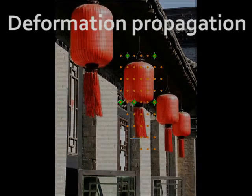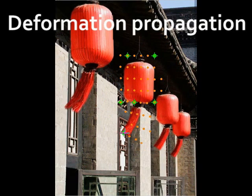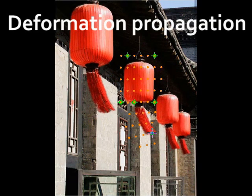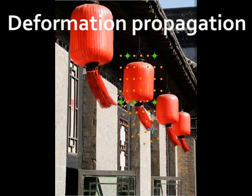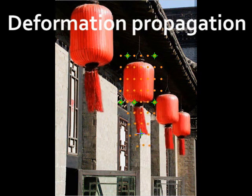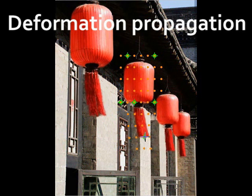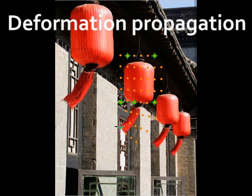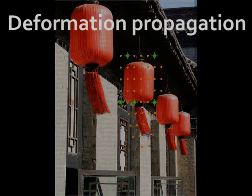Deforming repeated elements in an image while maintaining consistency is laborious if done manually. The dense correspondences found by our method enable simultaneous deformation of a group of repeated image elements. Here we show such deformation propagation for a group of lanterns.